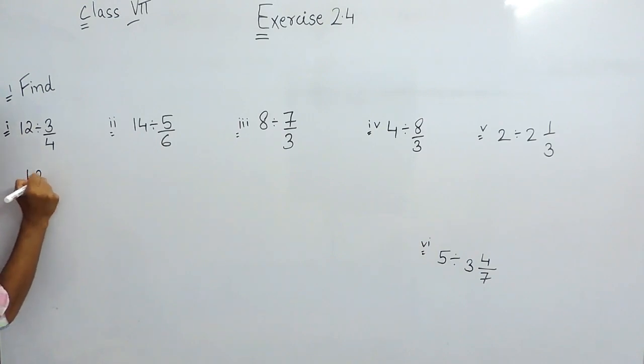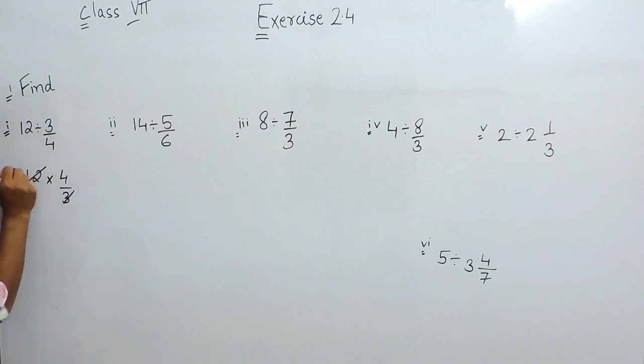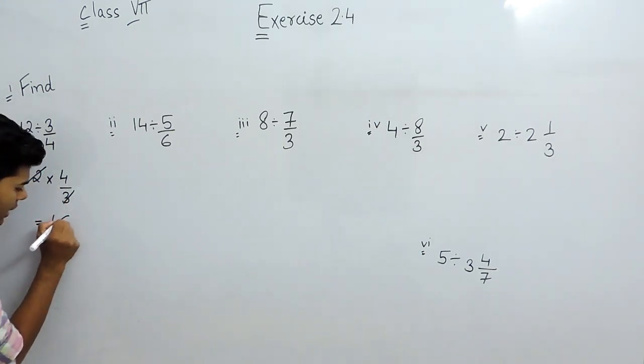What I mean to say is if it is 12 divided by 3 by 4, we can write this as 12 multiplied by 4 by 3 and now we will simplify. 3 times 4 is 12 and 4 times 4 is 16. The answer will be 16.